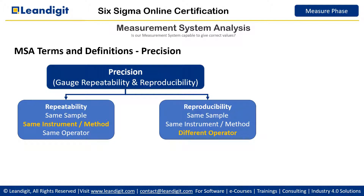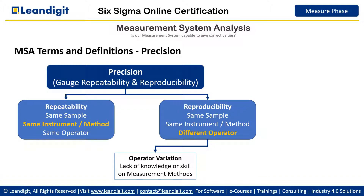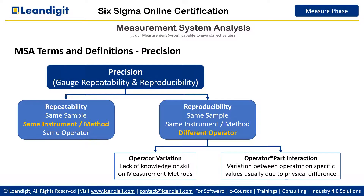On the other hand, when the sample is the same and the instrument and method are standardized, but different operators are measuring the same sample, the variation that comes from this is called reproducibility, or gauge reproducibility. These two variations together are called gauge repeatability and reproducibility, often called GRR. Reproducibility errors arise when operators are not trained in standard methods, resulting in operator variation. When there are physical differences between operators causing different measured values for the same part, we call it operator-part interaction.